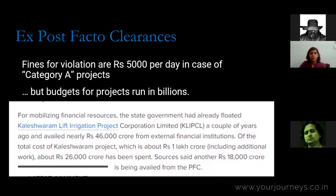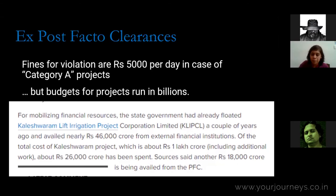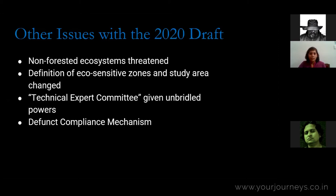Allowing ex-post facto clearances essentially legitimizes violations of the EIA notification. To give a sense of the quantum of the fines, they are up to 5,000 rupees per day for violation of a Category A project — yet the budgets for these projects run into several crore rupees. The Kaleshwaram Lift Irrigation Scheme, which I worked on, had a budget of 1.25 lakh crore rupees. What is a 5,000 rupee per day fine when the project budget is that enormous?